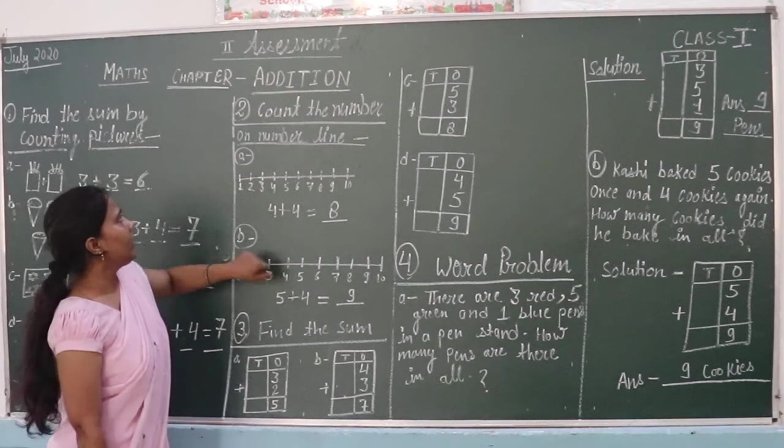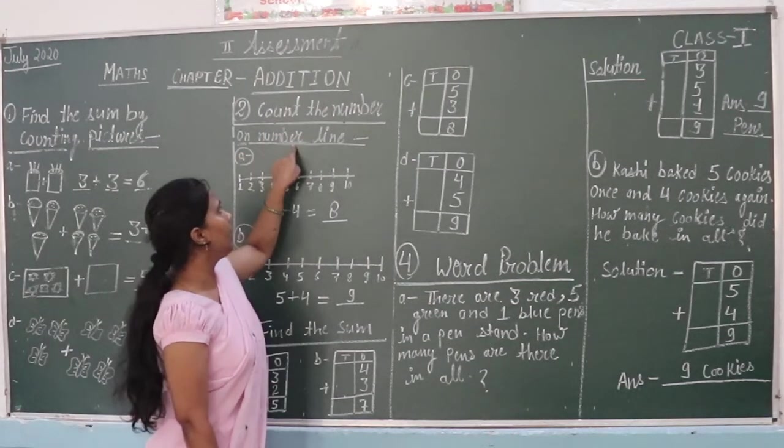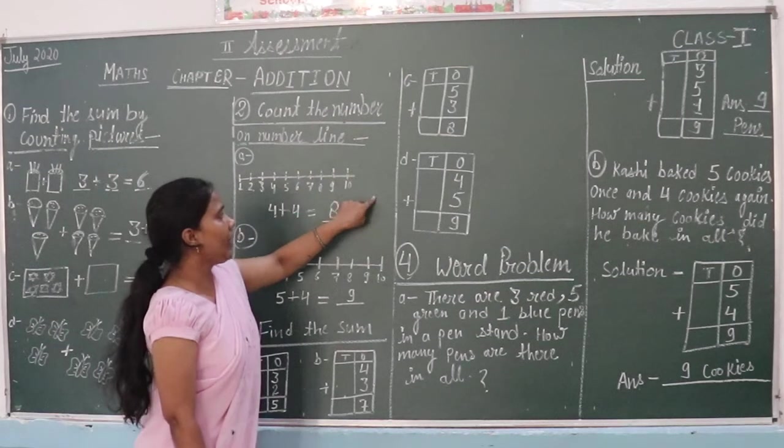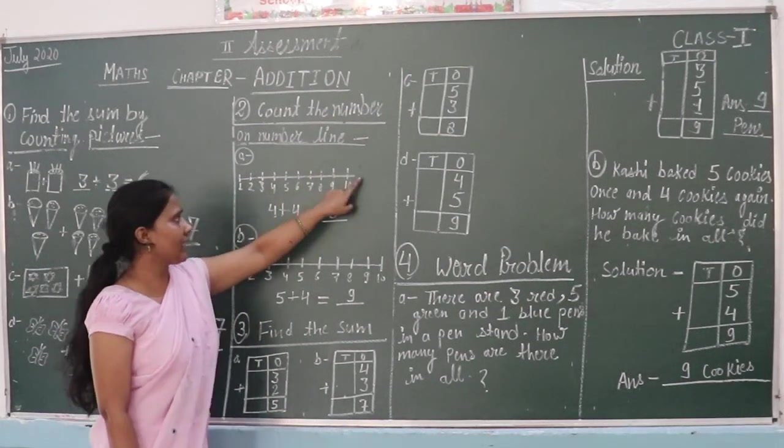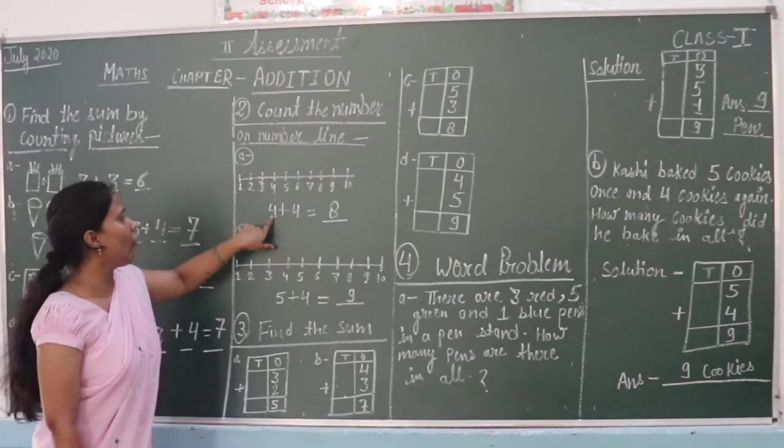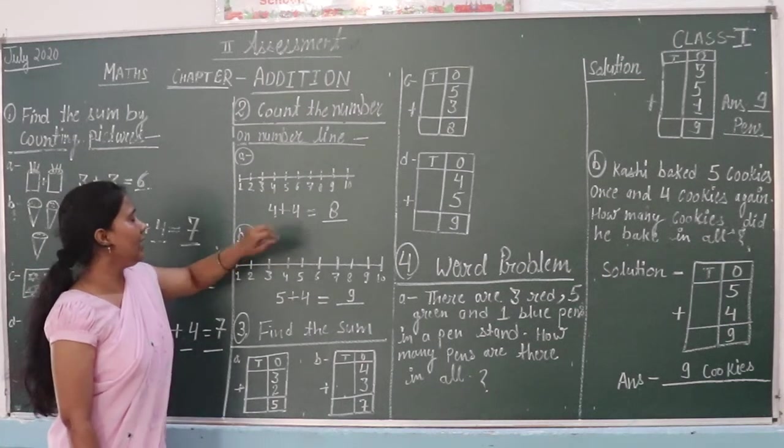Second question. Count the number on number line. We will add the answer. 4 plus 4. This is the answer.